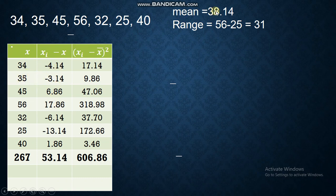So, 35 minus 38.14, you will have negative 3.14. The same process until to the last data, 40 minus 38.14. So, you will have 1.86. So, you have this as your total.